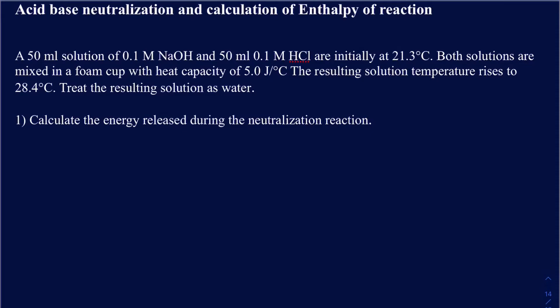This question says you start with 50 milliliters of 0.1 molar NaOH — that's your base — and it's mixed with 50 milliliters of 0.1 molar HCl — that's your acid. Both were initially at the same temperature, so that would be your initial temperature. The two solutions are mixed in a calorimetry cup, very likely a foam cup.